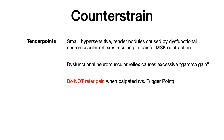A very high yield thing to understand about tender points is they do not refer pain when palpated. So when you're doing your structural exam and you palpate something that feels like a nodule, if it refers pain, it's actually something else called a trigger point. If it doesn't refer pain when you palpate it, then it's just a tender point — and it's the tender points that we treat with counterstrain. Tender points do not refer pain; trigger points do. This is a very high yield point for Comlex as well as in-class exams.